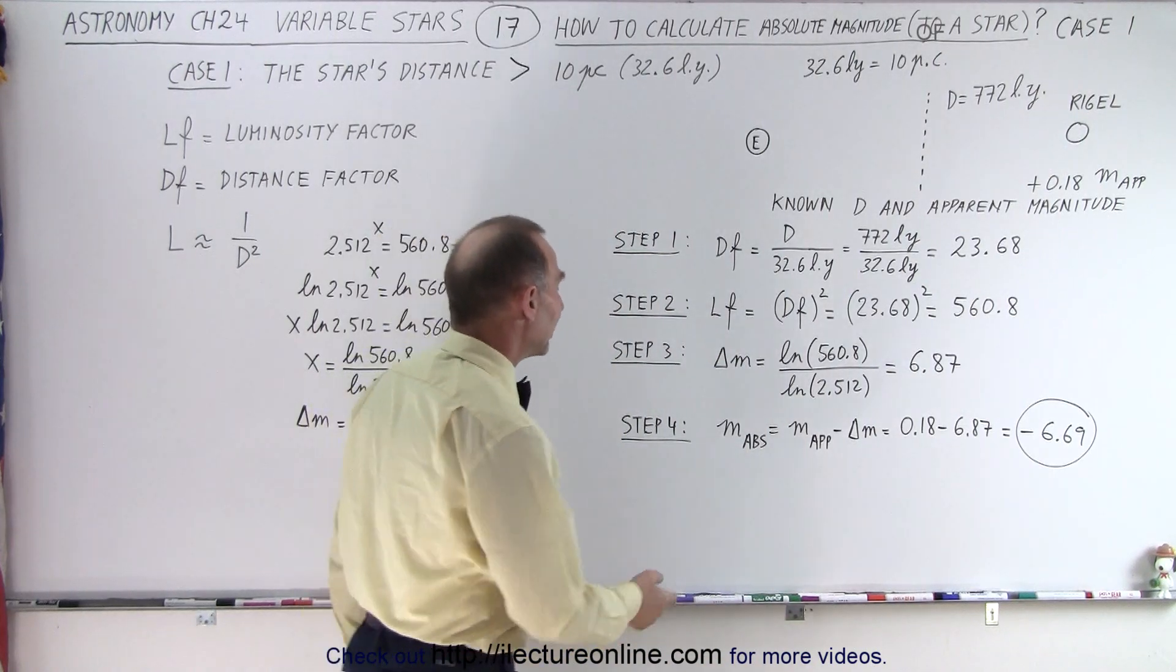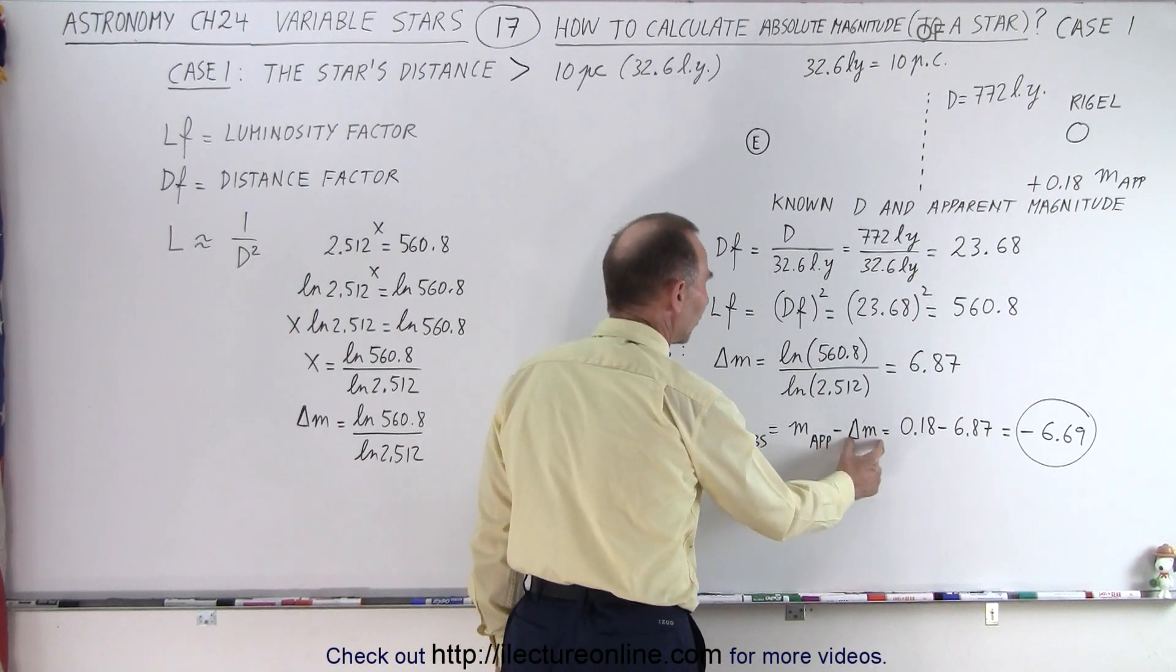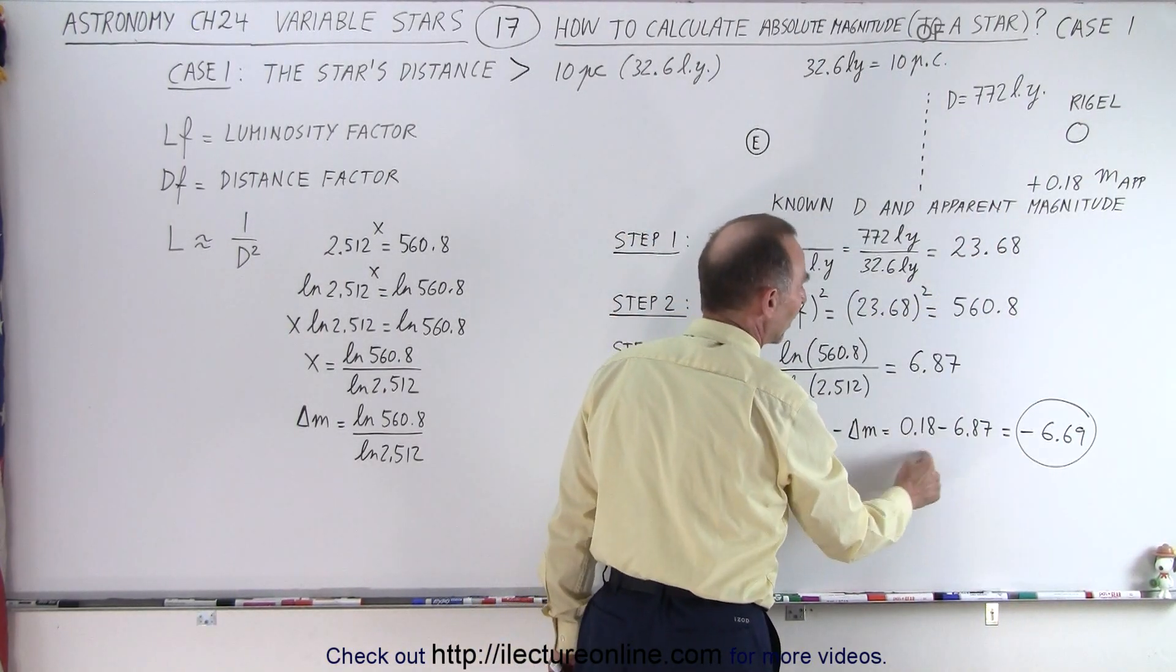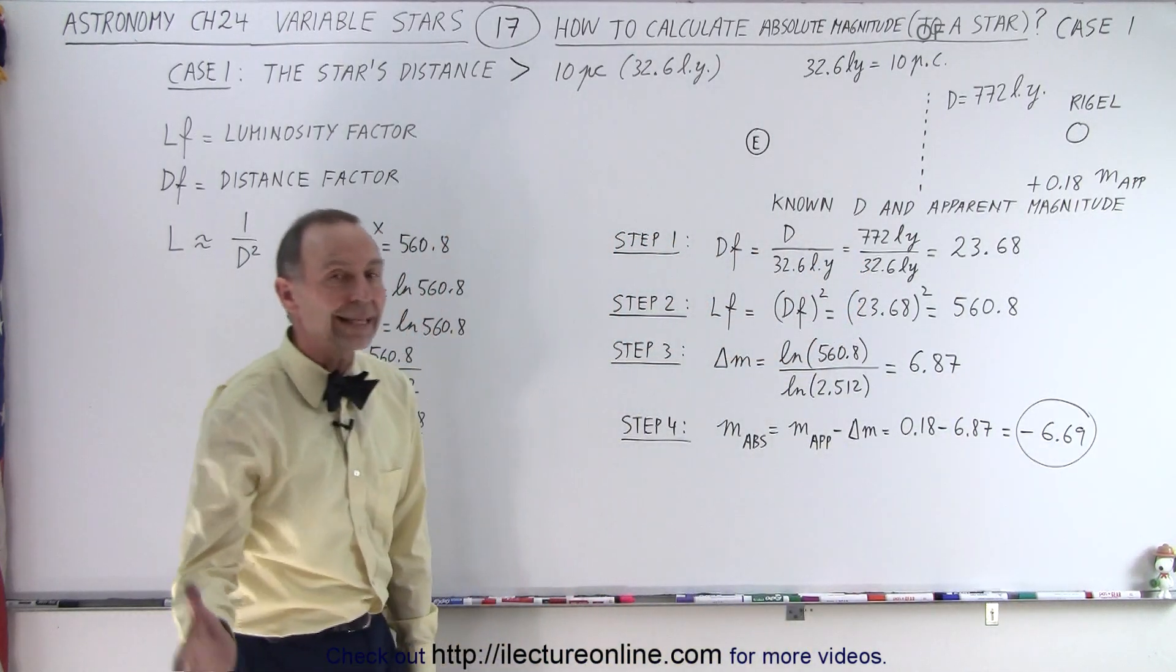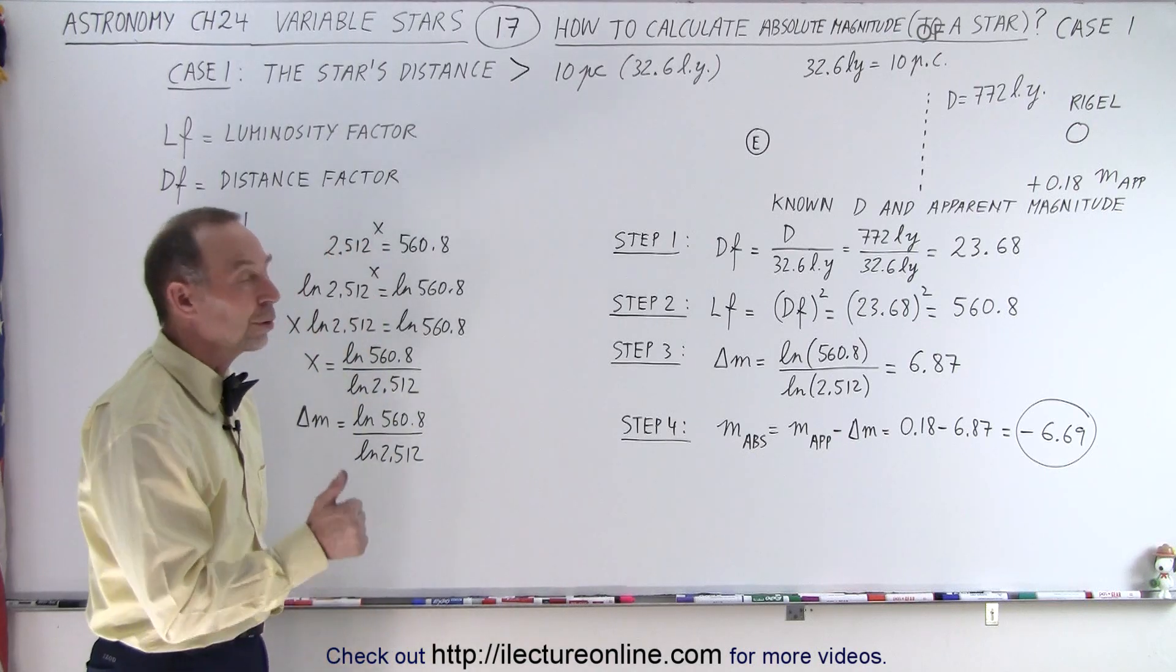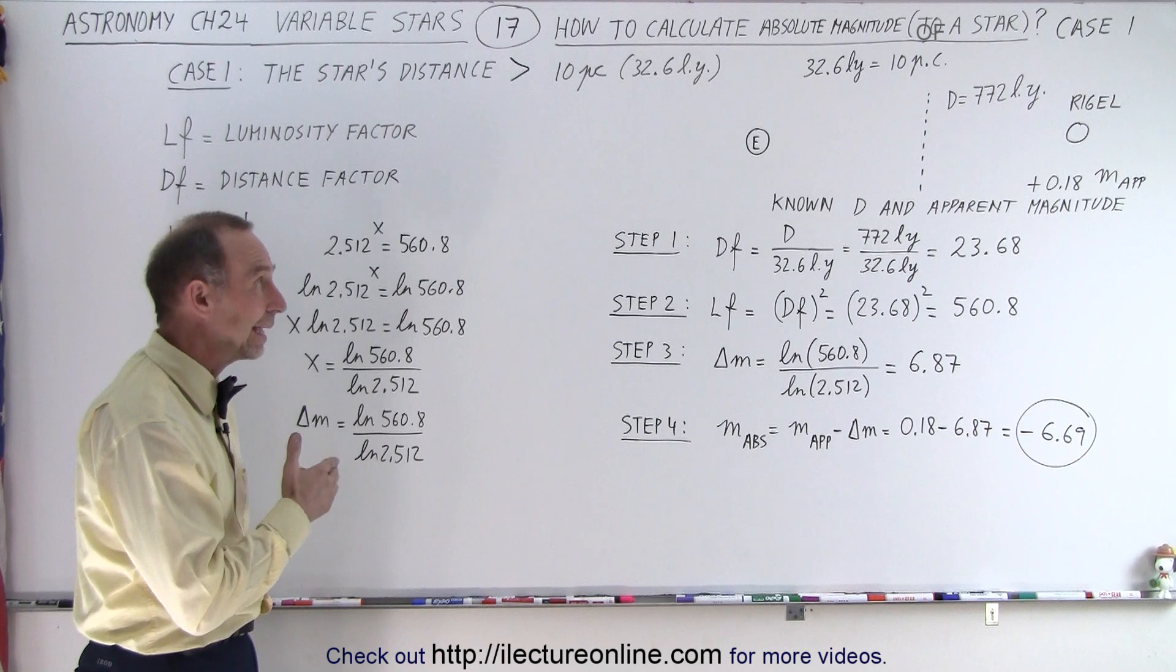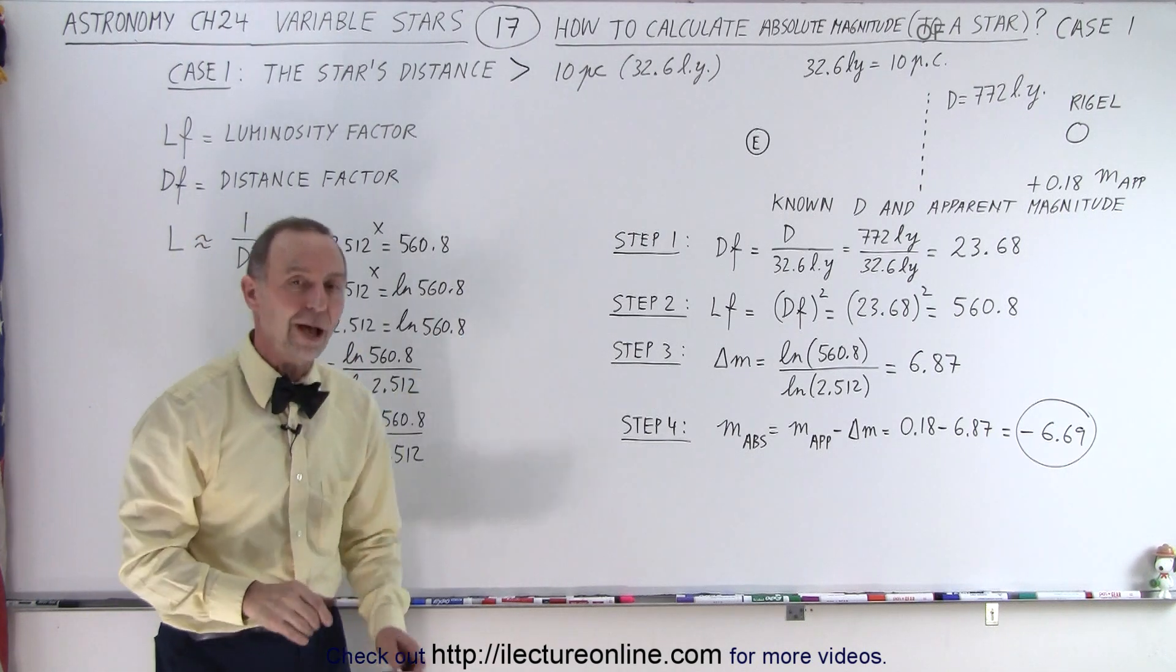And then, the final step to find the absolute magnitude, we take the apparent magnitude and subtract the difference we just found. So, in this case, the apparent magnitude is 0.18, subtract the difference, and we get the absolute magnitude. And that's how we find the absolute magnitude if we know the distance and the apparent magnitude. And in the case of a star that's farther away than 10 light years, this is how you do that.